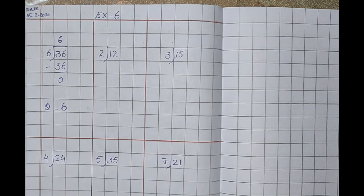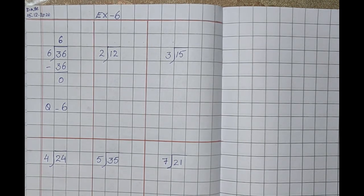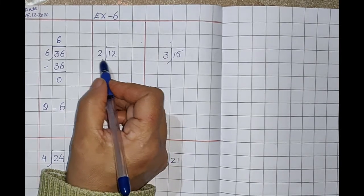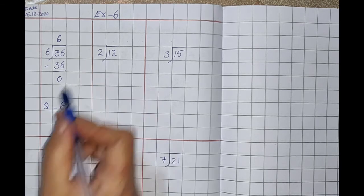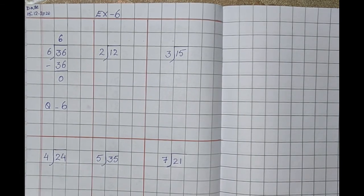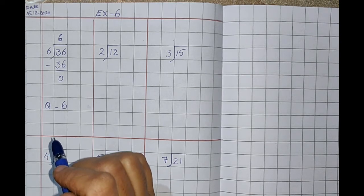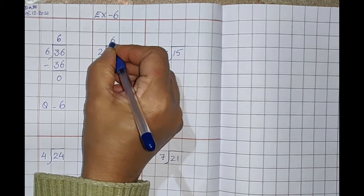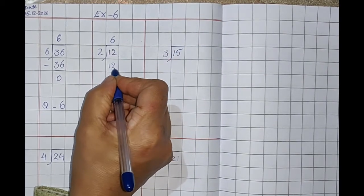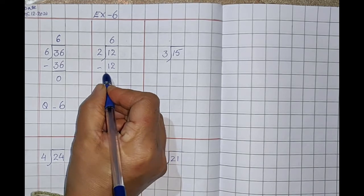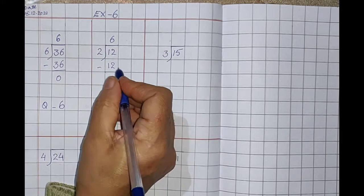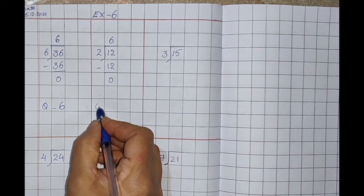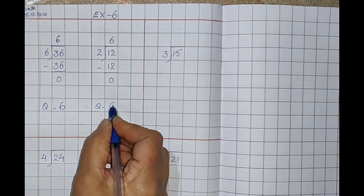Make 6 columns and write the numbers properly. For 12 divided by 2: read the table of 2. Going through — 2 ones are 2, 2 twos are 4, 2 threes are 6, 2 fours are 8, 2 fives are 10, 2 sixes are 12. It goes 6 times. Put the minus sign, draw the line neatly — 12 minus 12 is 0. Your quotient is 6.